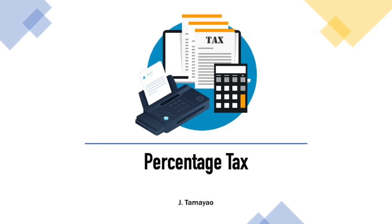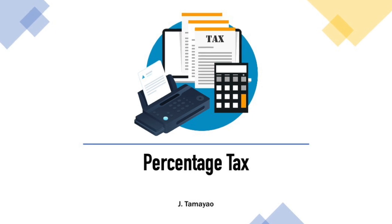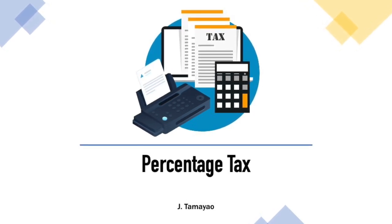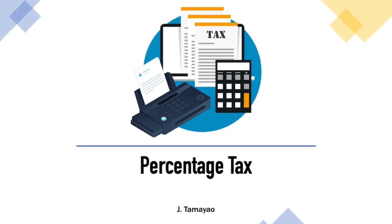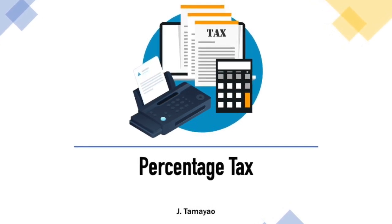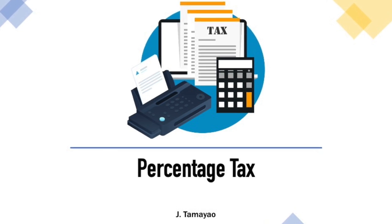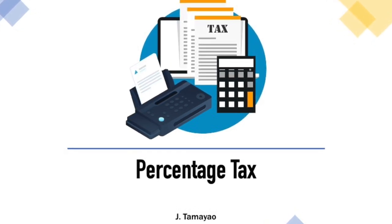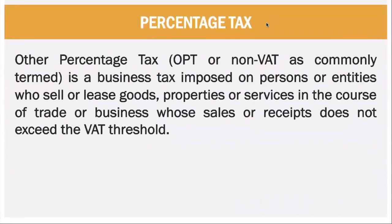For this session, we will talk about other percentage tax and other tax that is imposed under your business taxes. We already finished VAT or value added tax, so we go now to percentage tax. Percentage tax, or OPT, also known as non-VAT, is a business tax imposed on persons or entities who sell or lease goods, properties, or services in the course of trade or business whose sales or receipts do not exceed the VAT threshold.